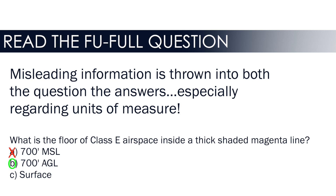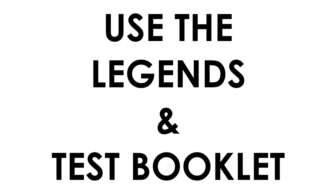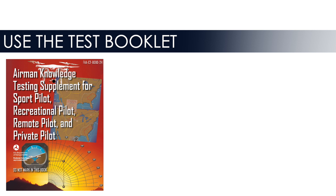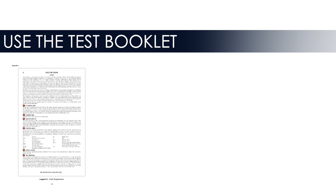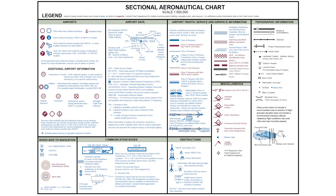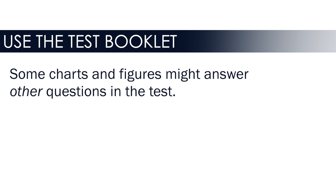Read every single answer, paying attention to units of measure — especially on the remote pilot test. The third tip is to use the legends and other figures in the test prep booklet. You'll get the Airman Knowledge Testing Supplement when you go in, and there's a ton of great information in it. Most people go straight to a referenced figure, but the front pages have a VFR sectional chart legend where you can find airport and airspace question answers — showing the difference between towered and untowered airports, airspace altitudes, and radio frequencies. You've got two hours; take all of it if you need to.